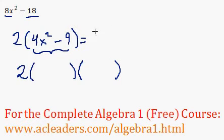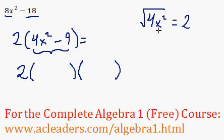And the square root of 4x squared, well, the root of 4 is just 2, and the square root of x squared is just x. So I can put a 2x over here, and another one over there.